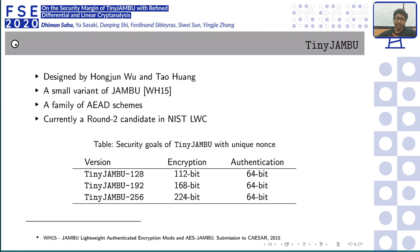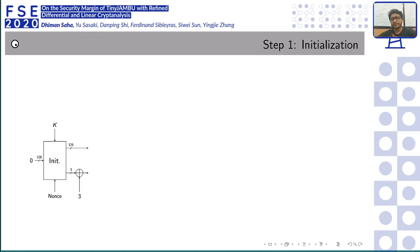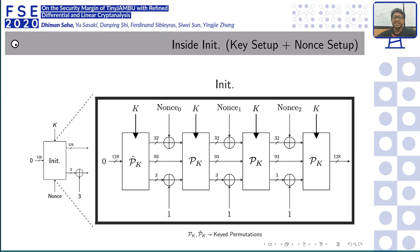Looking at the specification, TinyJAMBU has a very standard initialization, but something interesting happens during it. The initialization can be broken up into steps: the key is processed through a permutation first, and then the nonce is processed in three blocks. The nonce is 96 bits — constant across all variants — and every time it absorbs 32 bits. It's a duplex sponge construction, and this multi-block absorption of the nonce is a key point of interest.